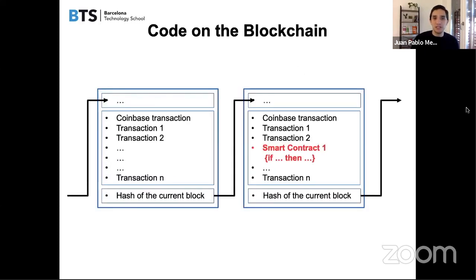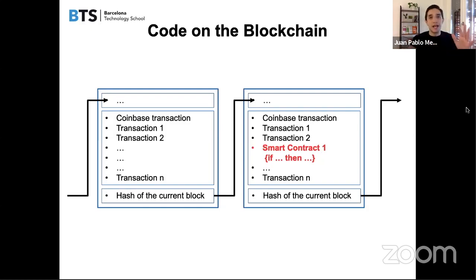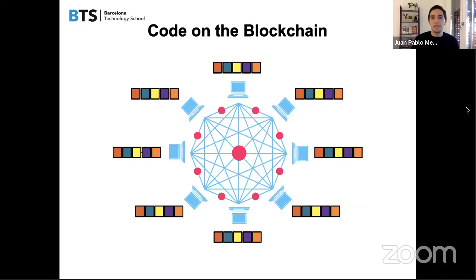The smart contract goes onto the blockchain as a transaction — instead of writing 'Juan Pablo is sending X Ether to Jorge,' you have the smart contract code: 'If Juan Pablo sends this money, then something happens.' That is what a smart contract is — code written on the blockchain, replicated in multiple computers. All the computers have exactly the same code. If the conditions happen exactly as written, the code executes itself.